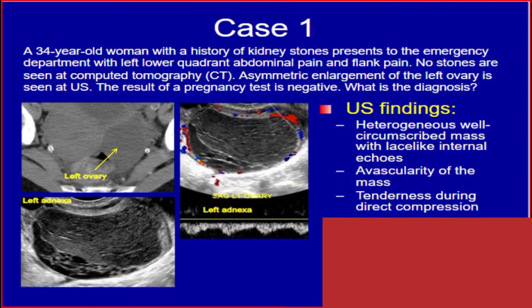Case 1. A 34-year-old woman with a history of kidney stones presents to the emergency department with left lower quadrant abdominal pain and flank pain. No stones are seen at computed tomography. Asymmetric enlargement of the left ovary is seen at ultrasound. The result of a pregnancy test is negative. What is the diagnosis?